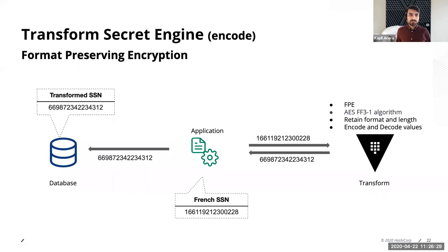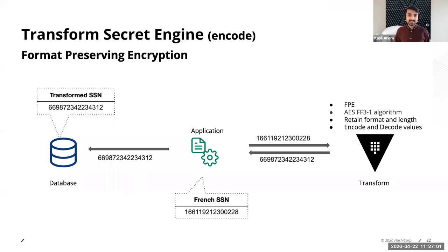That was the Transit Secret Engine. For format-preserving encryption, it's very similar — just a different set of APIs. In this case, we have the same format as the original SSN, and we're also retaining the length. So not only the format, but also the length is retained. This is done using the FF3-1 algorithm that Nico already mentioned. It's an encoding workflow: the application receives the data, sends it to Vault to encode it, saves it to the database, and when it wants to decode, it fetches the value from the database, sends it to Vault, and receives the real value.